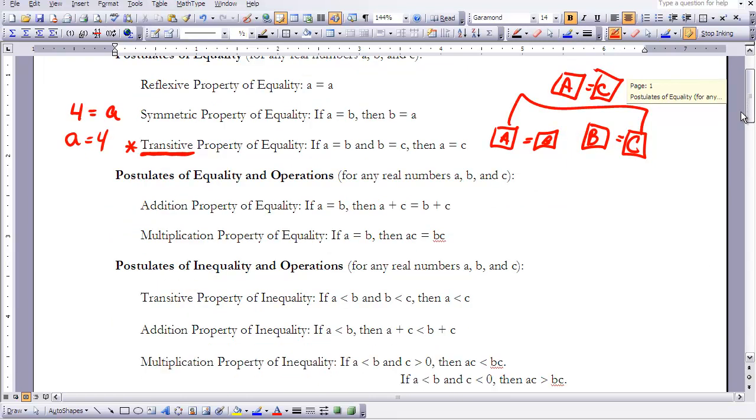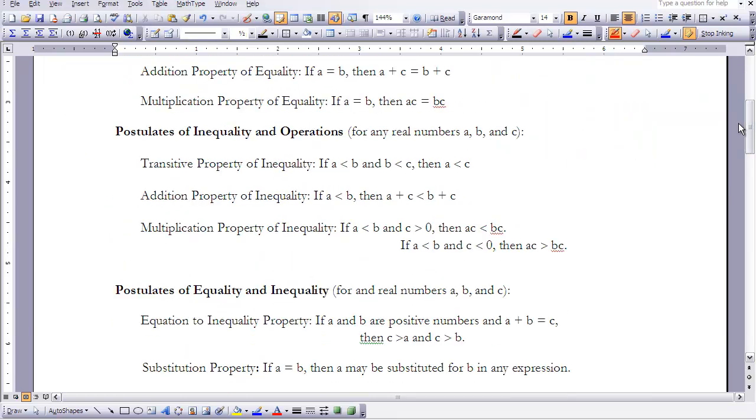Now we can also look at postulates of inequality in operations. So let's take a look at the transitive property. If A is less than B and B is less than C, then A is less than C. Well, let's pretend 4 is less than 5, and 5 is less than 6. So does that make sense that 4 is less than 6? That's really what they're trying to get at here.